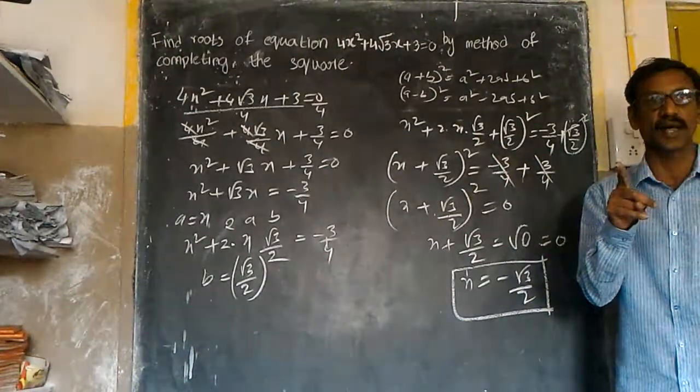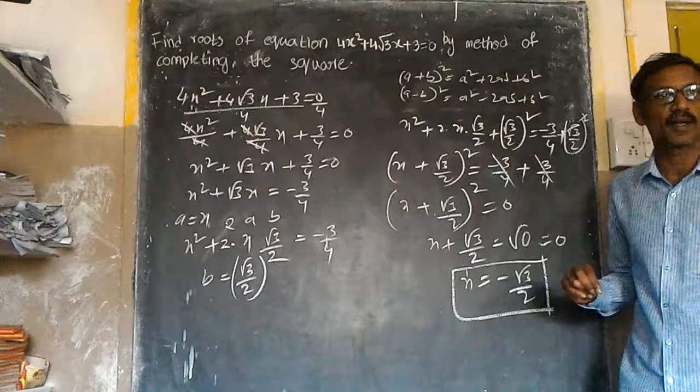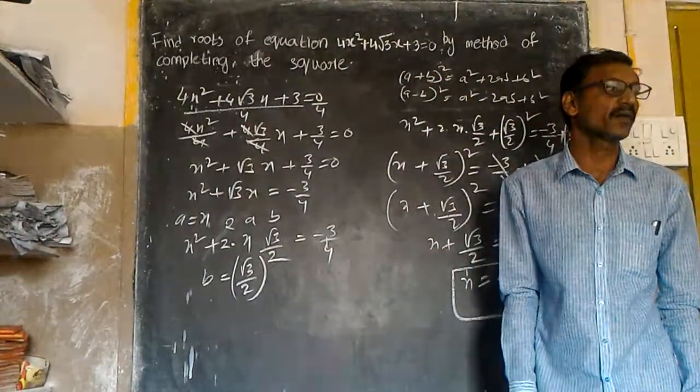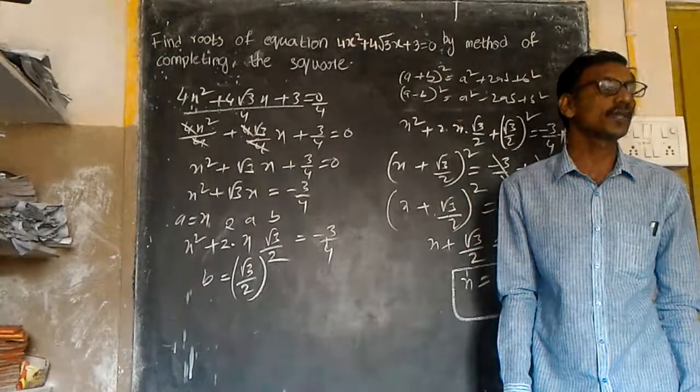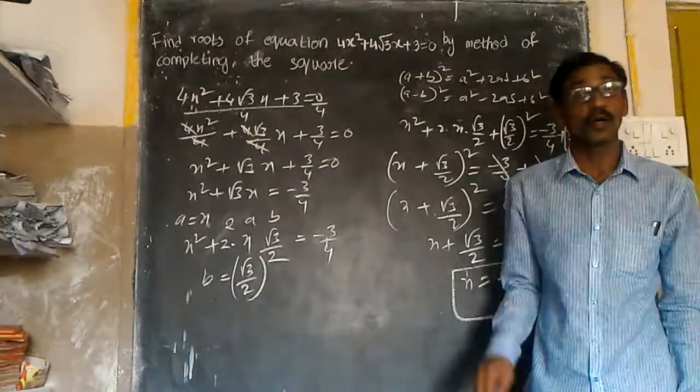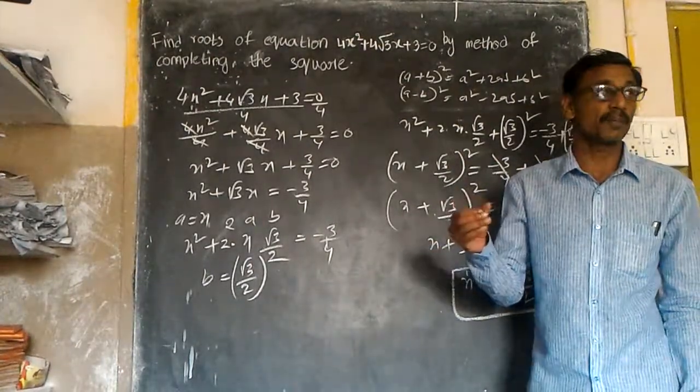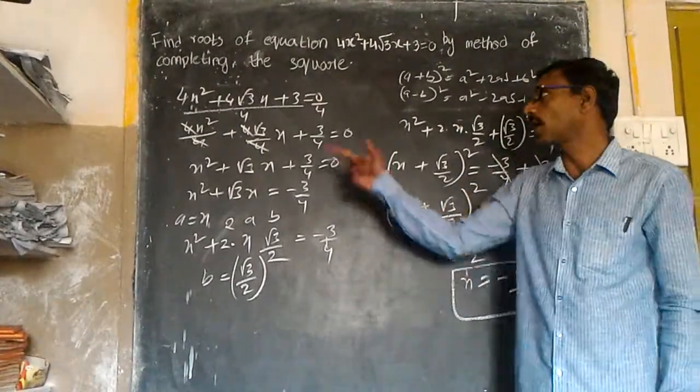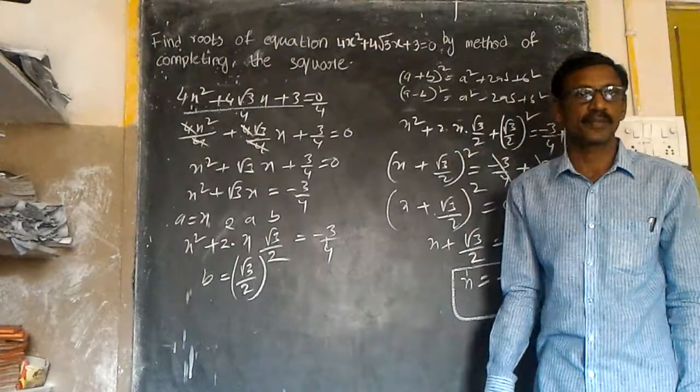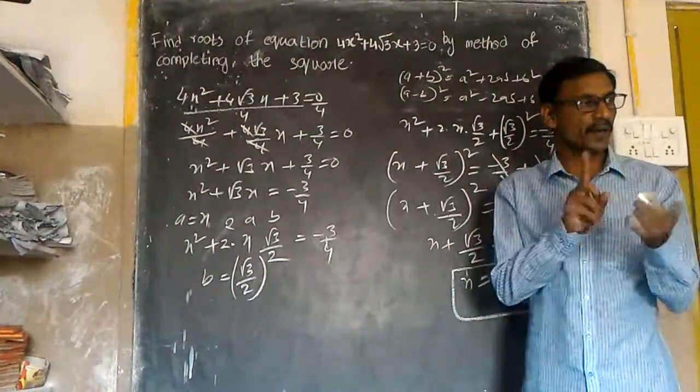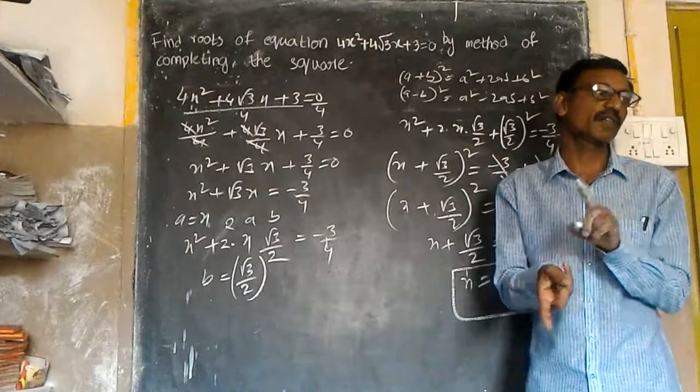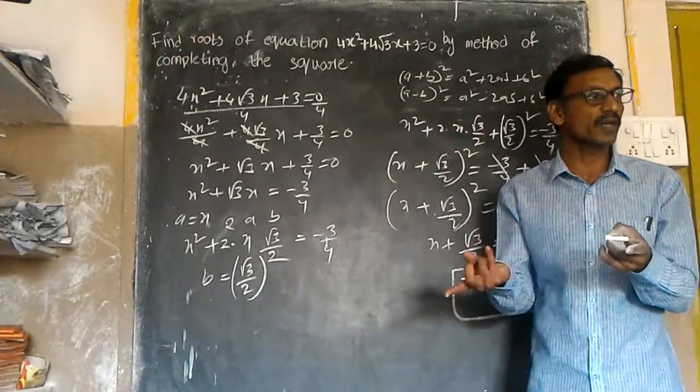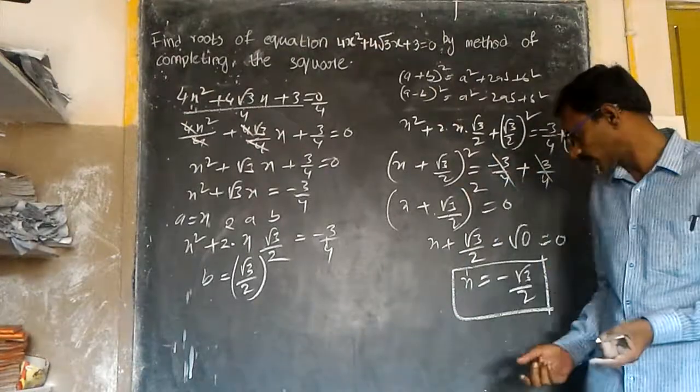So the two roots are equal to each other. Both roots equal -√3/2. This is a case of equal roots.